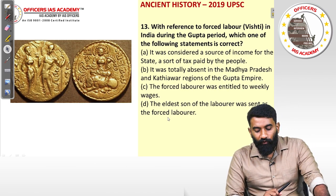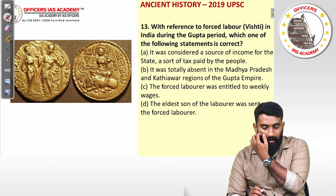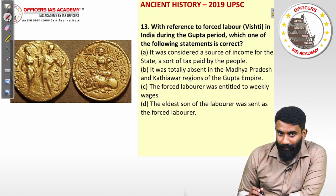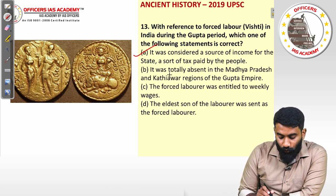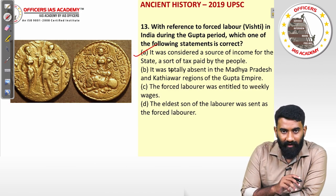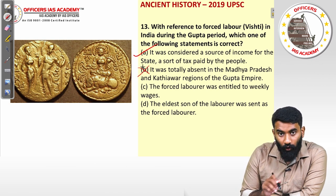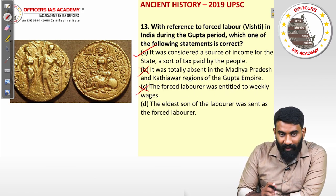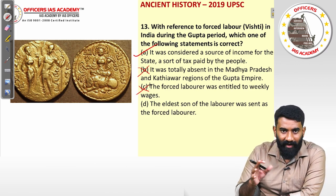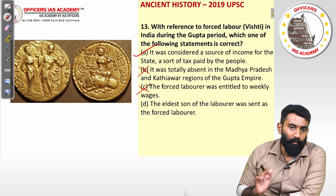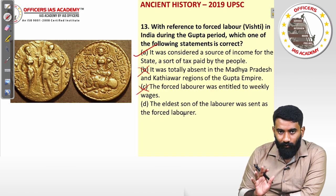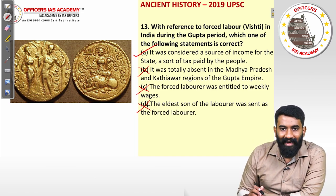Question thirteen: with reference to forced labor (Vishti) in India during the Gupta period, which statement is correct? It was considered a source of income for the state — a sort of tax paid by the people — and that is the correct answer. The statement that it was totally absent in Madhya Pradesh and Kathiawar is wrong, as these are precisely the regions where Vishti is frequently mentioned. Forced laborers were not entitled to weekly wages. The answer is option A.